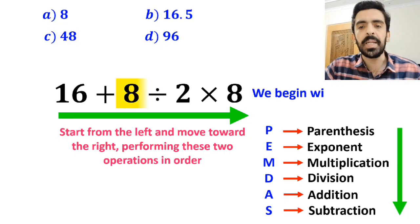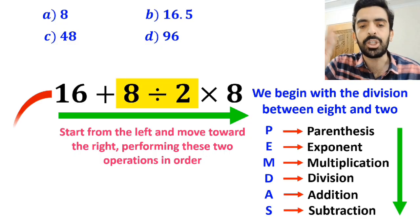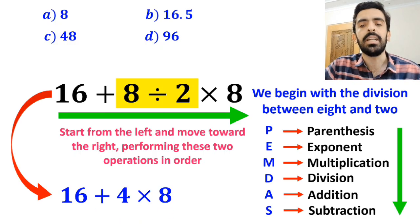So, we begin with the division between 8 and 2, and instead of this expression, we write 16 plus 4 times 8.